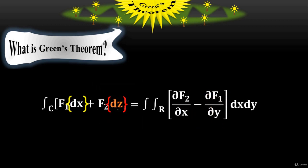Again, if I take f sub 2 with dz, you have to put dz on the right side as well. Here, f sub 1 is with respect to x, but on the right side, f sub 2 is with respect to x. And f sub 2 is with respect to z here, but on the right side, f sub 1 is with respect to z.